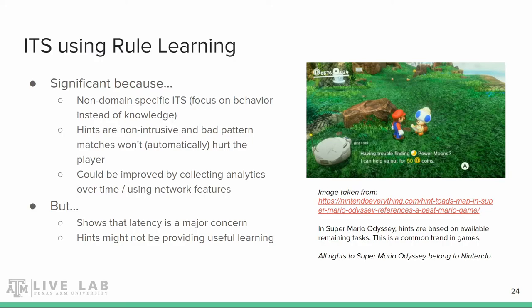On the downside, this approach shows that latency is an issue — the game lags every time someone clicks the hint button because of computation using the player models. Another downside is that since this approach isn't domain specific, the hints given to the player are also not domain specific; they're just proposing an action to perform. This type of hint may not be as useful for helping players achieve learning outcomes.